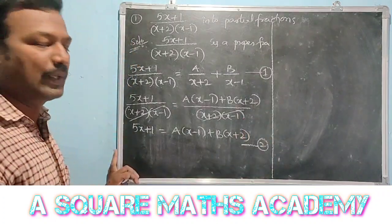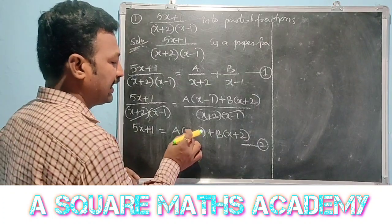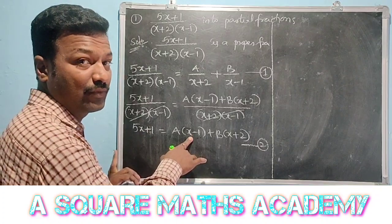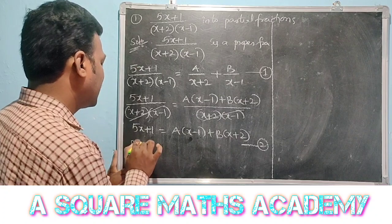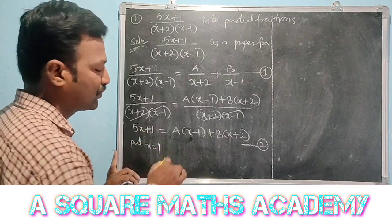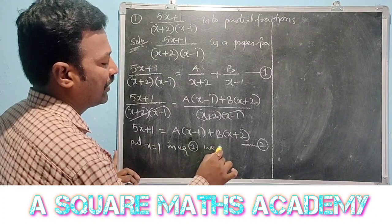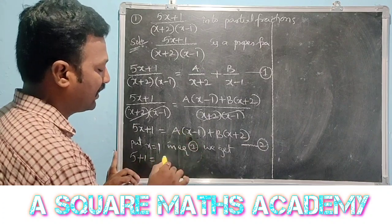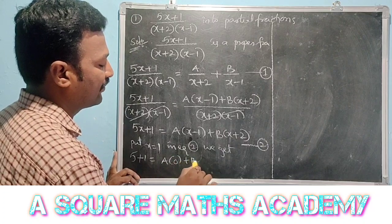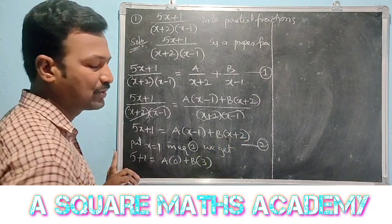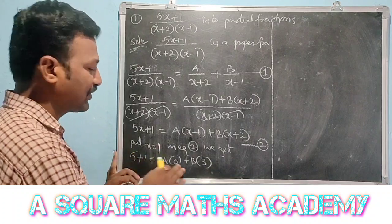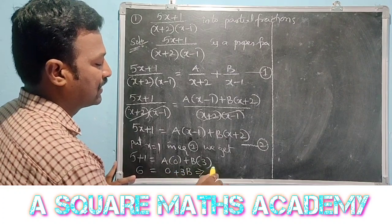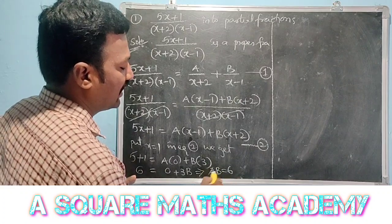Now, to find B, set the factor x minus 1 equal to zero, giving x equals 1. Substituting x equals 1 in equation 2: 5(1) plus 1 equals A(1 minus 1) plus B(1 plus 2), which gives 6 equals A(0) plus 3B, so 3B equals 6, therefore B equals 2.